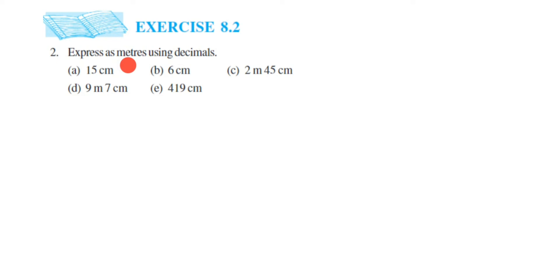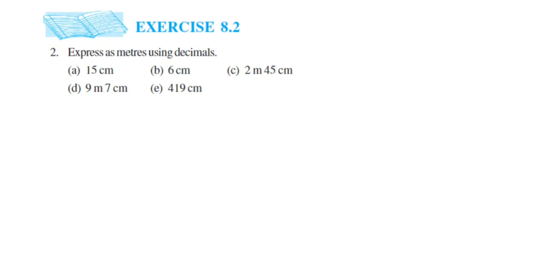Remember, when converting centimeters to meters, we are converting a smaller unit to a higher unit. When you convert smaller to higher, you always divide. We divide by 100, since 1 meter is equal to 100 centimeters. Whenever you convert smaller to higher unit, you always divide.